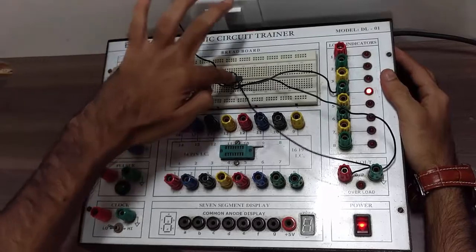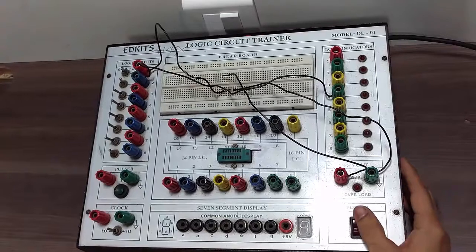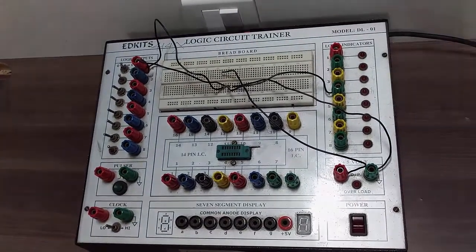Similarly you can remove this AND gate IC and insert other ICs which you want to verify, and you can verify the truth table for the IC as well.